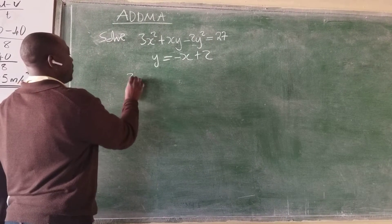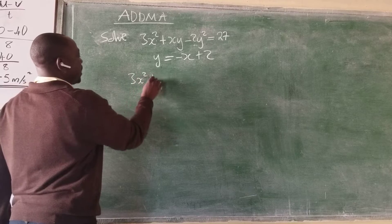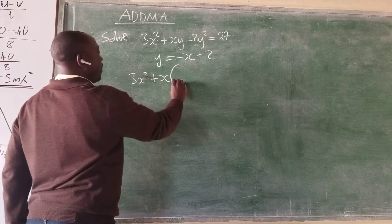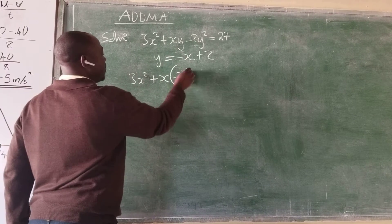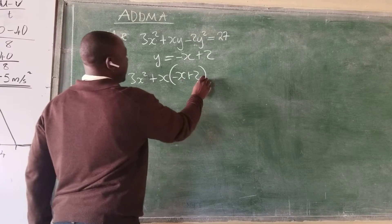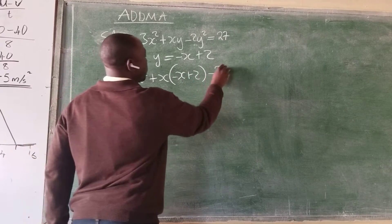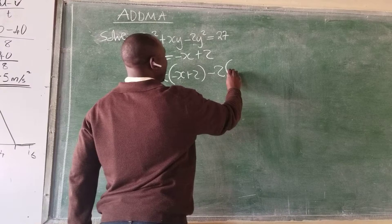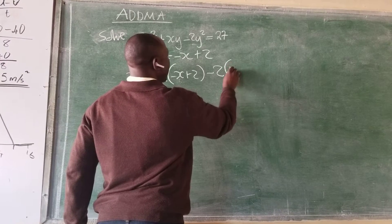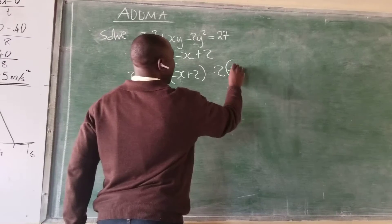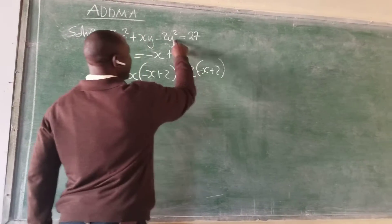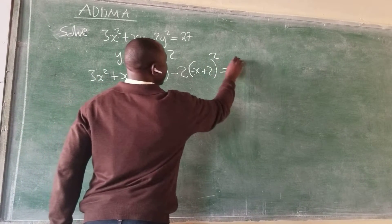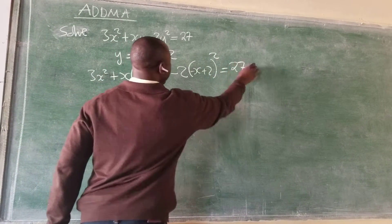This is going to give us 3x squared plus x. Then we have y, so we open a bracket and put negative x plus 2, close bracket, minus 2. Again where we see y, we open a bracket and put negative x plus 2. This y is actually being squared, so we square it, and this is equal to 27.